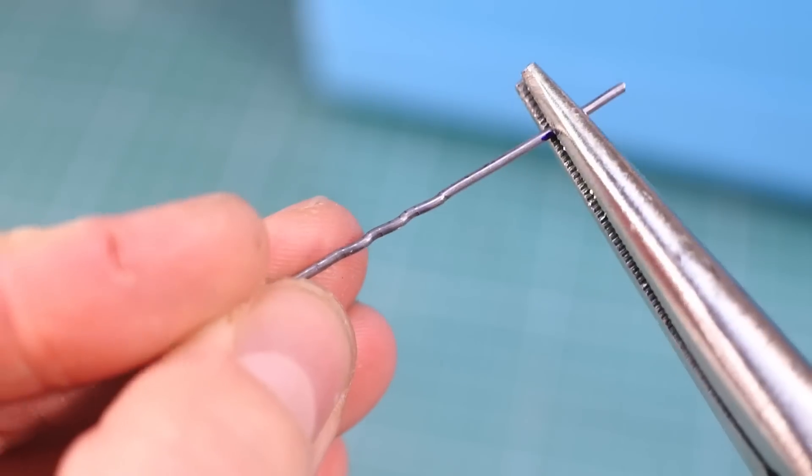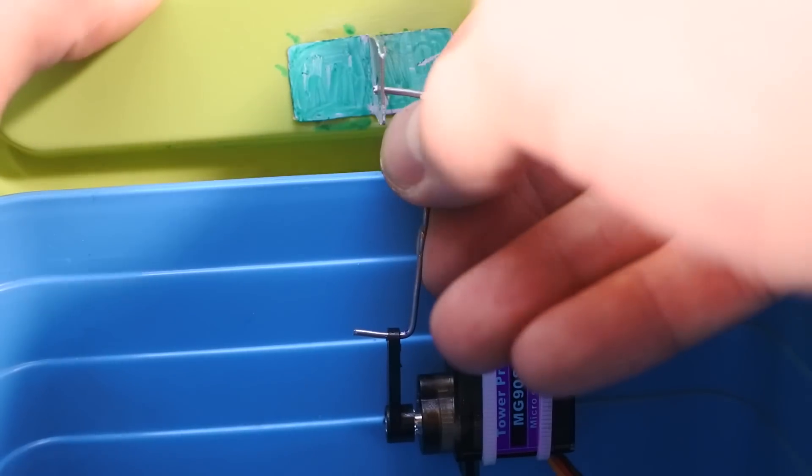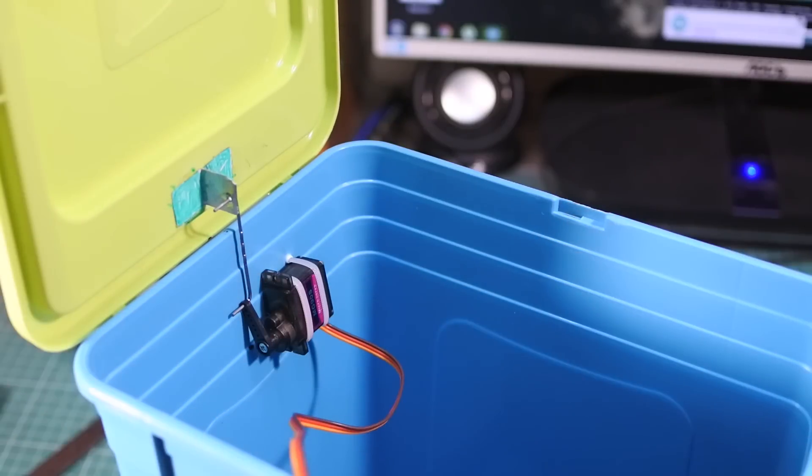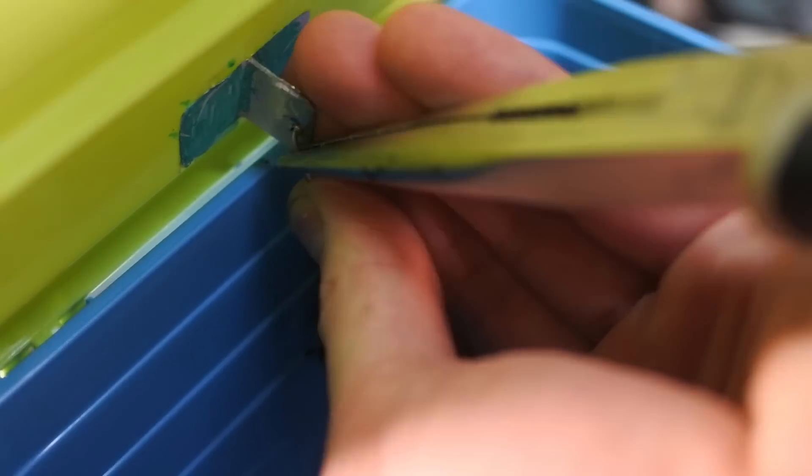Now I am making a connection rod from a huge paper clip. Insert it in the hinge and servo. Testing... works perfectly, so I am finally bending the paper clip to fix it.